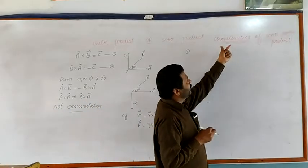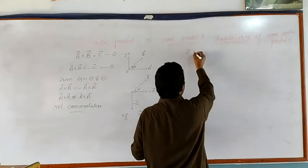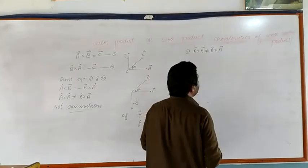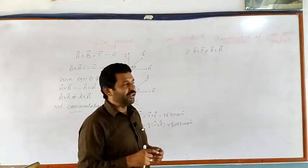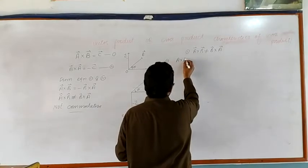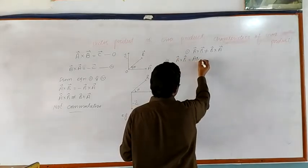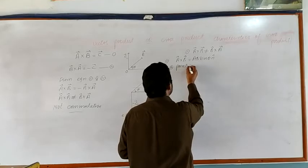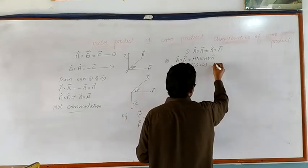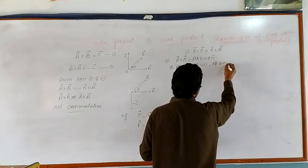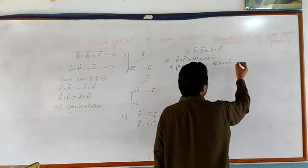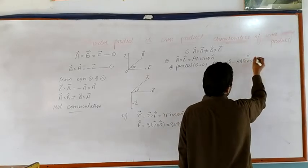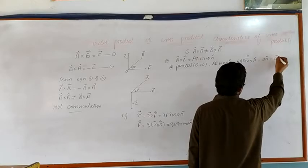Let us discuss the characteristics of cross product. As discussed, vector A cross vector B is not equal to vector B cross vector A, so cross product is not commutative. The cross product of vector A and vector B equals A B sine theta into n-hat. When two vectors A and B are parallel to each other, the angle between them is 0, so the cross product is A B sin(0) into n-hat. Since sin(0) equals 0, the resultant is a null vector.